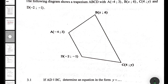So what I'm going to do is equate the gradient of AD and the gradient of BC. The x-value of B is unknown, the y-value of C is unknown, so I'm going to have x as an unknown, y as an unknown, and then make y the subject of the formula — which will give us an equation in the form y equals something.